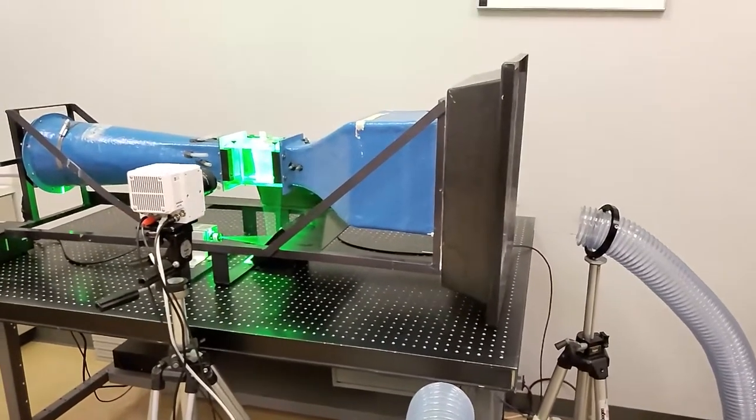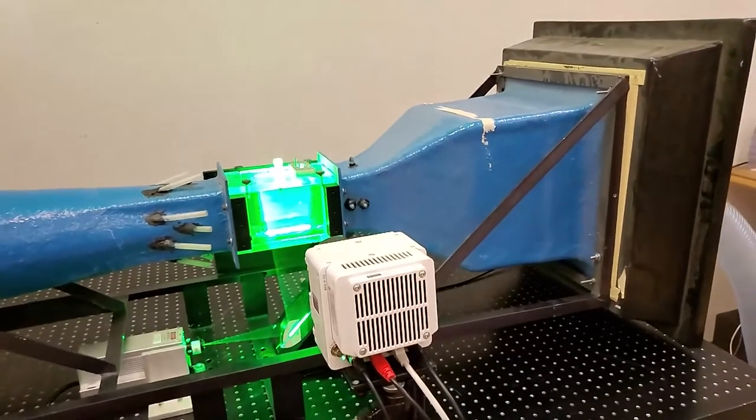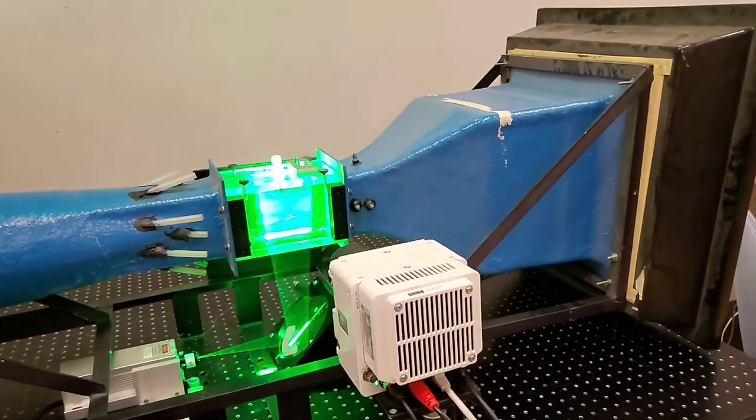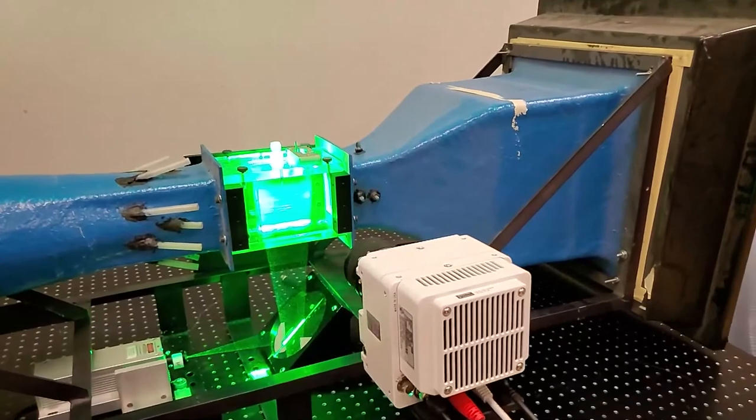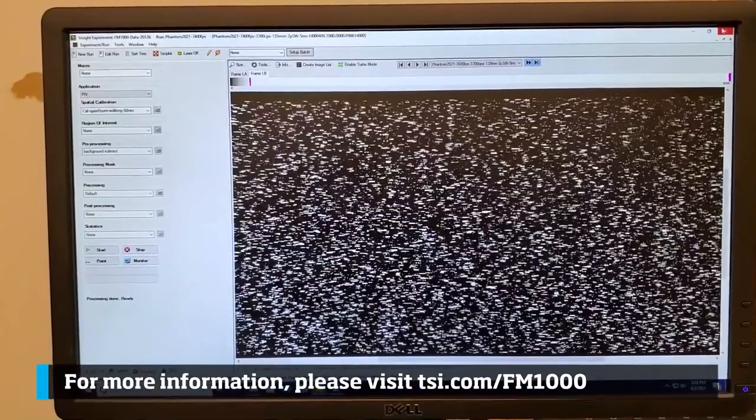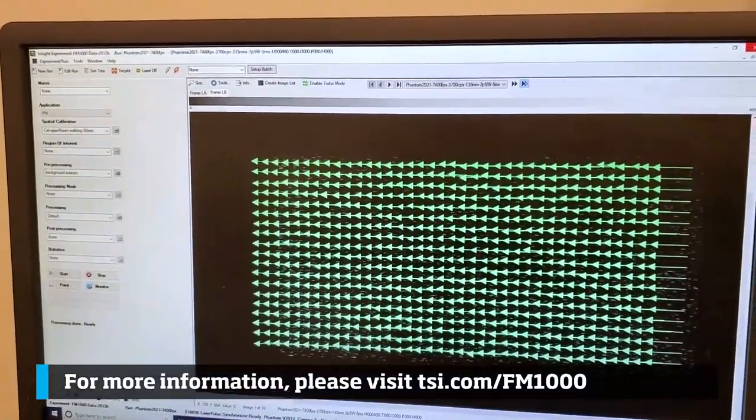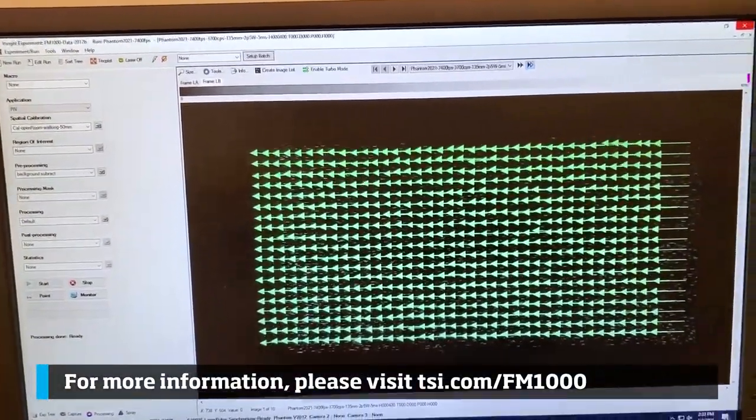As bubbles are introduced into the wind tunnel, the camera takes images of the micro bubbles in the measurement area. The particles are recorded in images in the software and processed to arrive at the vector field.